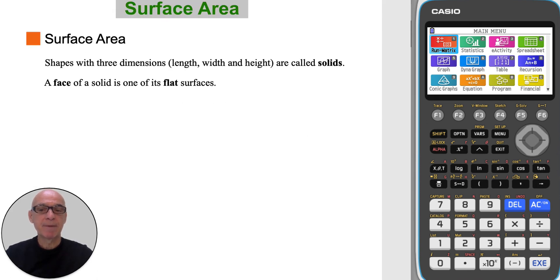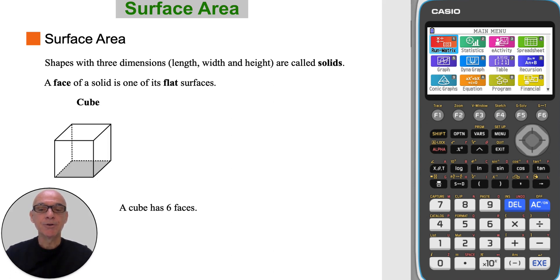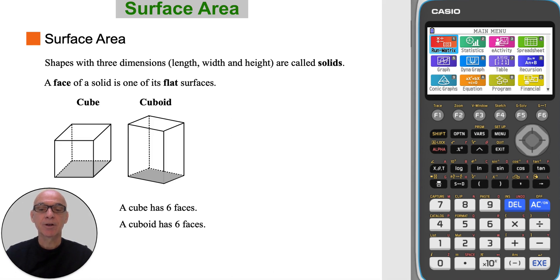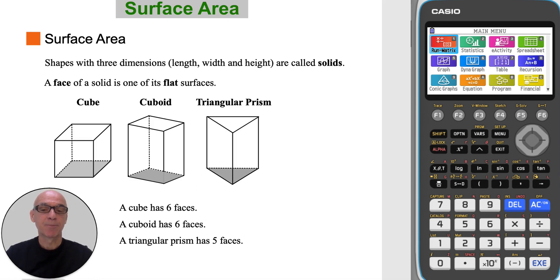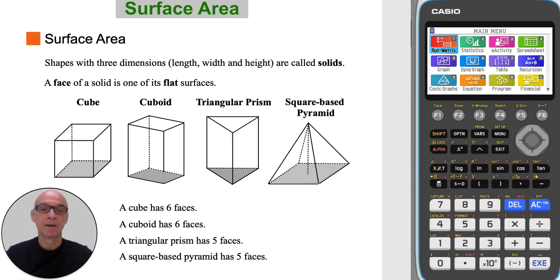Shapes with three dimensions — length, width, and height — are called solids. A face of a solid is one of its flat surfaces. A cube has six faces. A cuboid also has six faces. A triangular prism has five faces, and a square-based pyramid also has five faces.